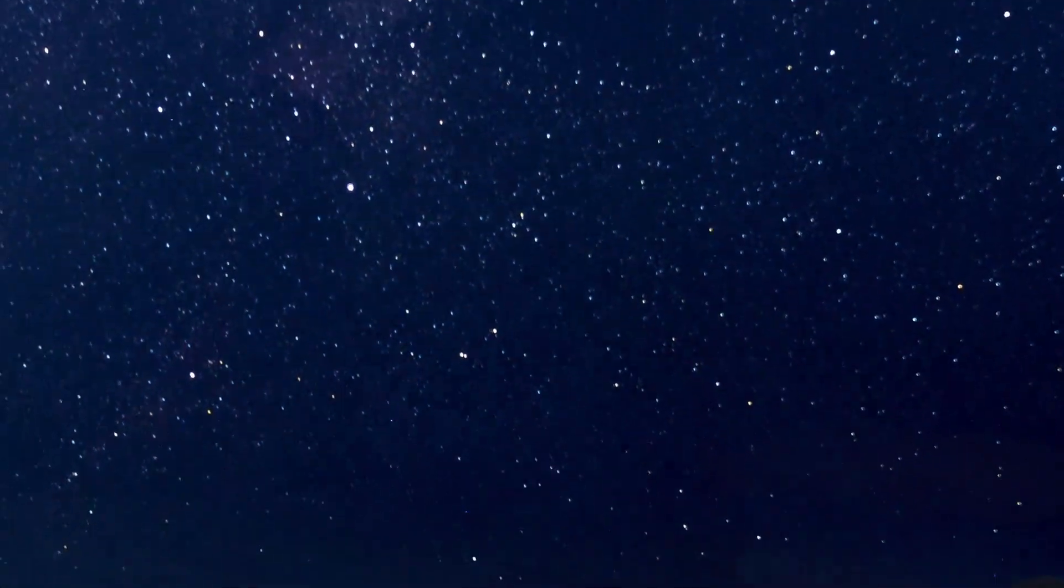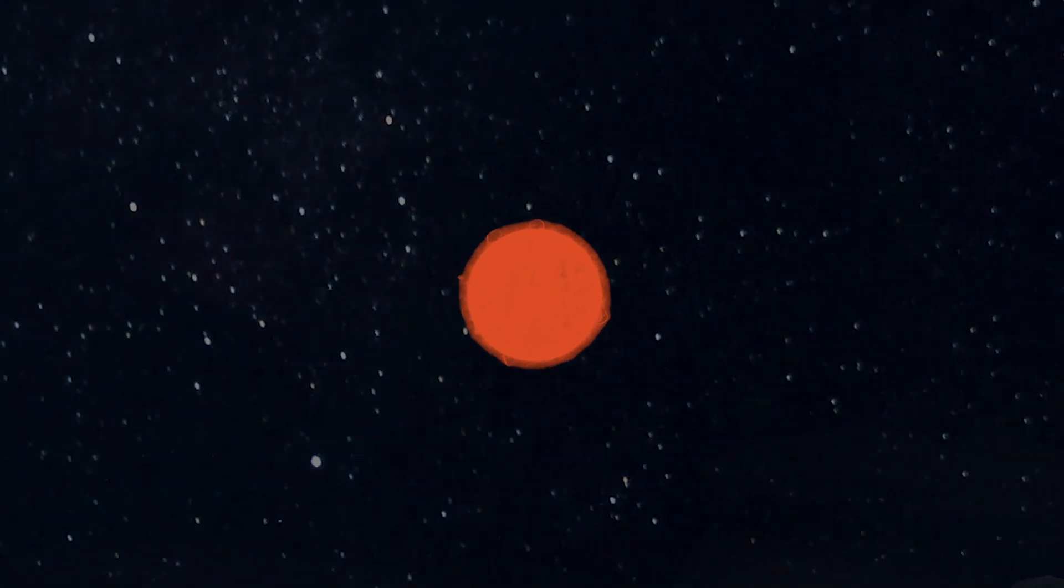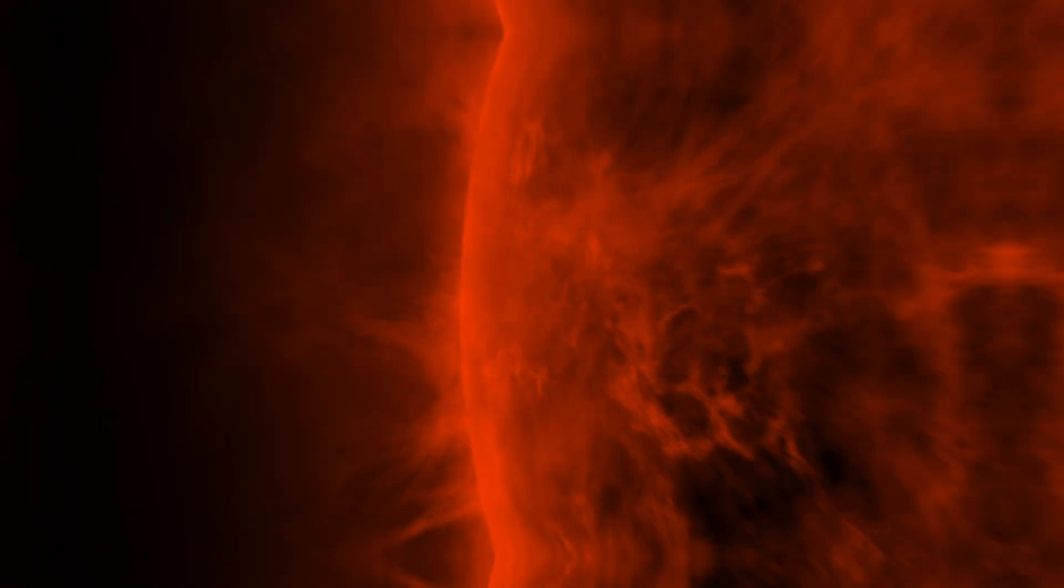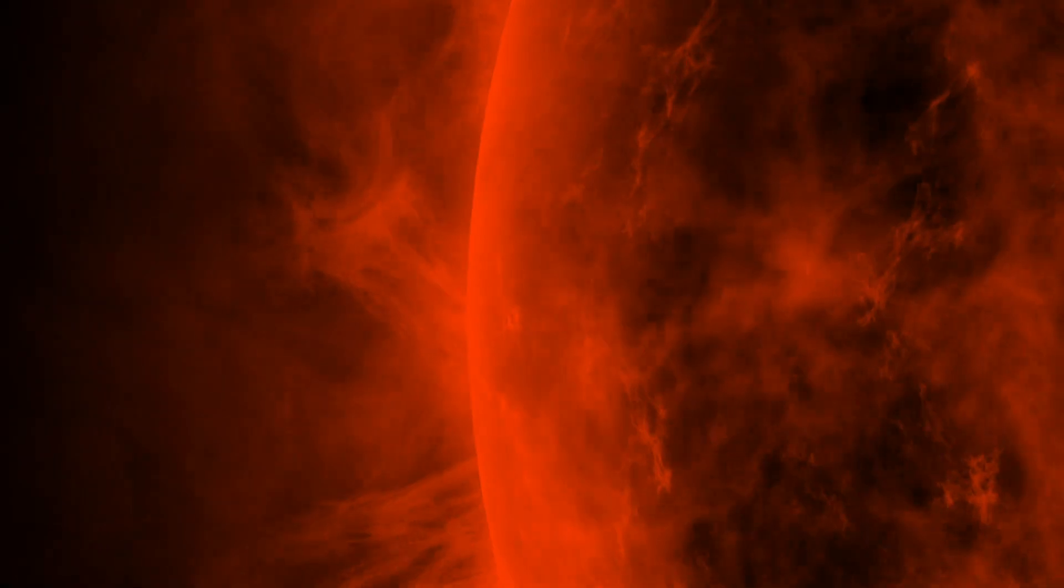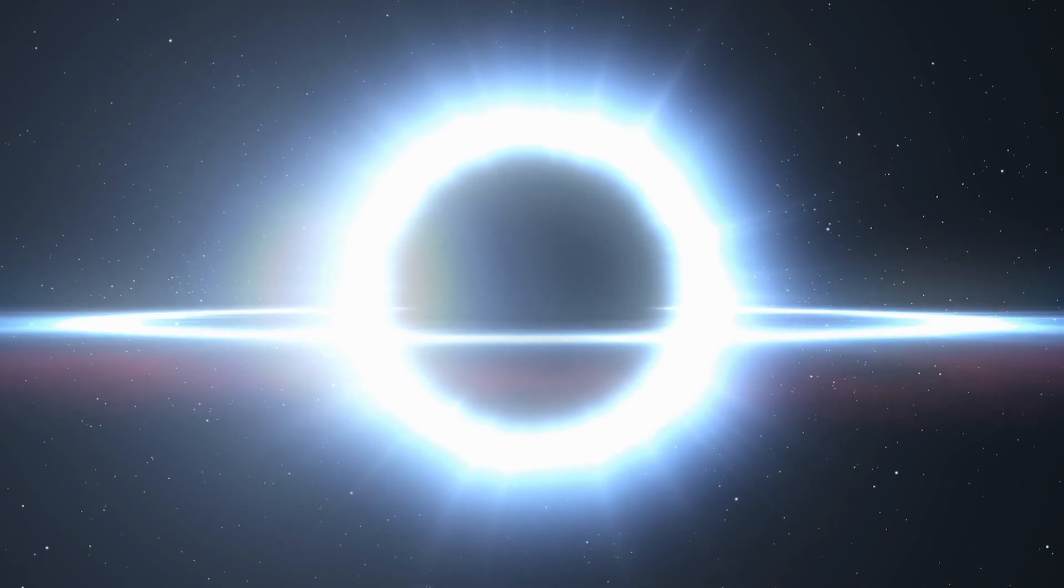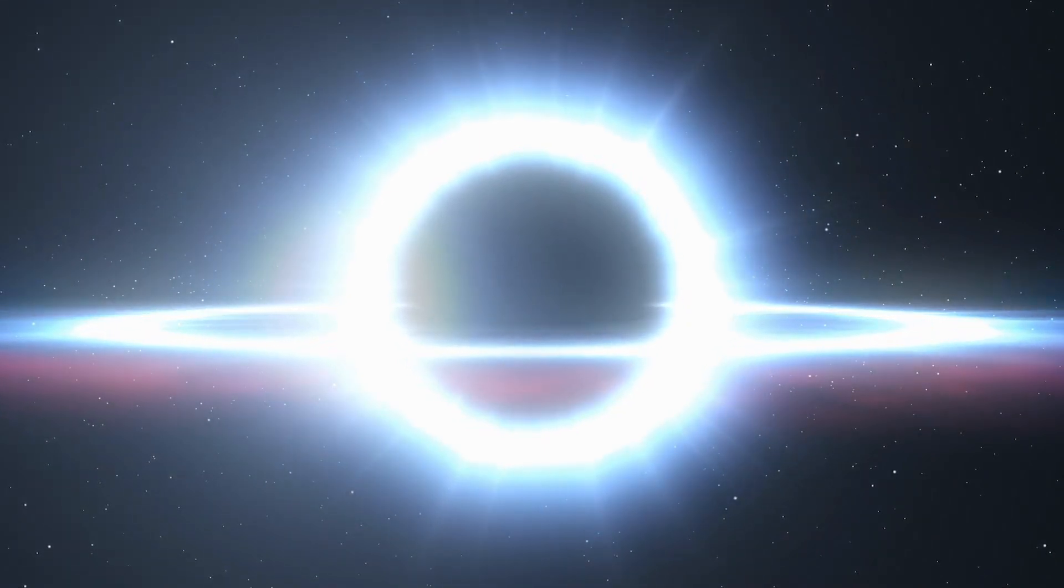As we gaze upon the heavens, the distinct reddish hue of Betelgeuse stands out against the backdrop of countless white and blue stars. This unique coloration is a result of its cooler temperature compared to other stars. Furthermore, the star's erratic behavior and the ever-present specter of its impending supernova only add to its enigmatic nature.